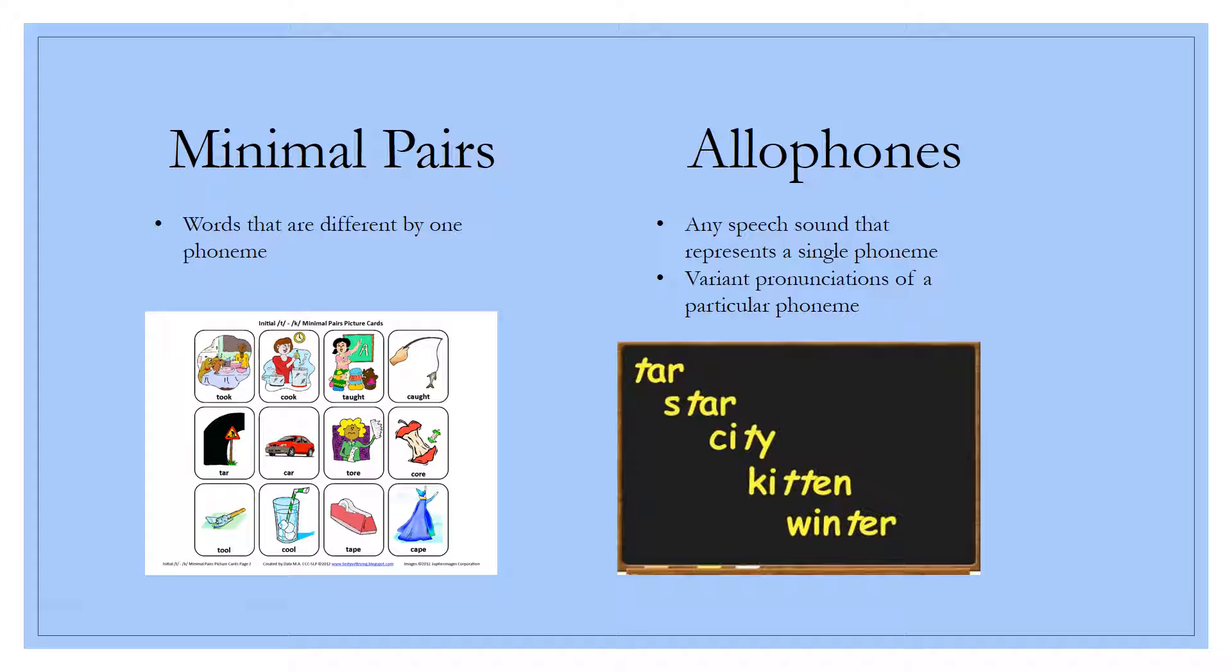Then we have allophones. Allophones are variant pronunciations of a particular phoneme. It's something that we hear, and it's a sound that may sound different in its context, just like star and city. In star, we can really hear the T sound, but in city, it's more like a diss sound. Even though it's the same, it sounds a little different.